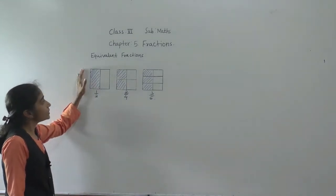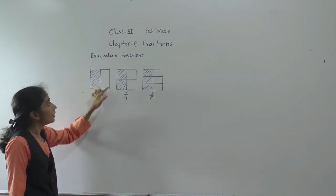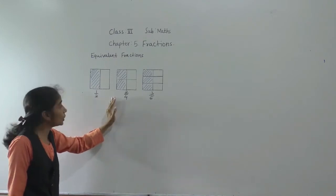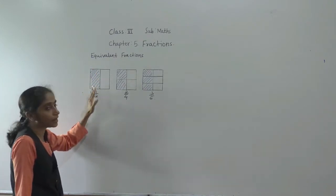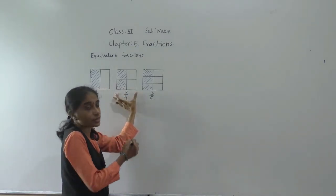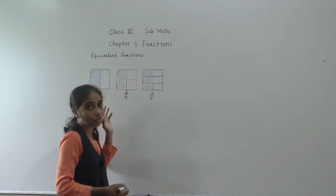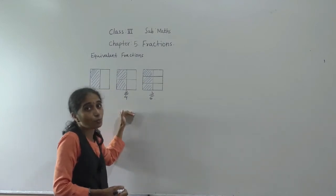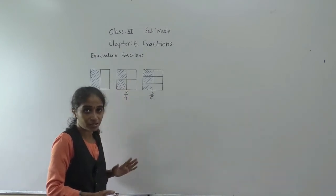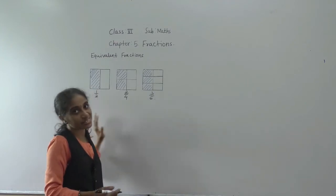What is an equivalent fraction? Observe this figure. In the first figure, it is divided into two equal parts, and from that one part is shaded. The second figure is the same, but it is divided into four equal parts, and from four parts, two parts are shaded. Two parts out of four means half of the part is shaded — same as the first figure.